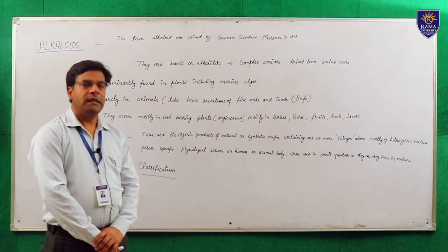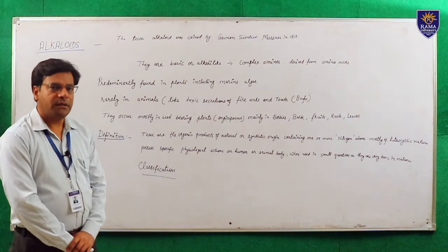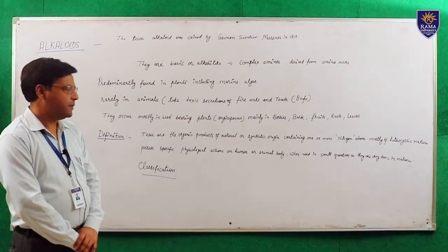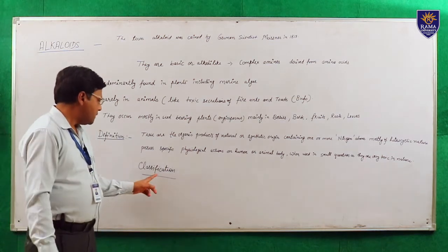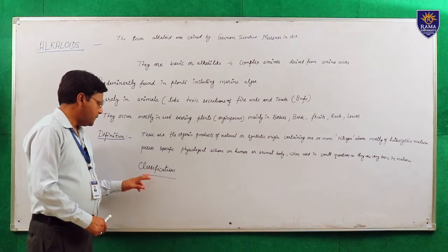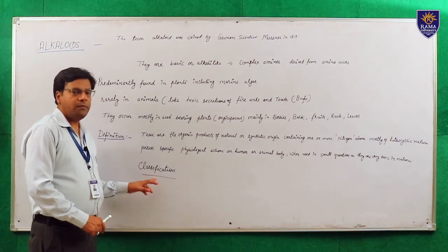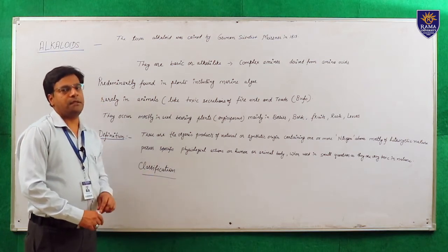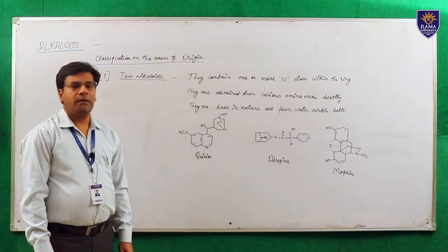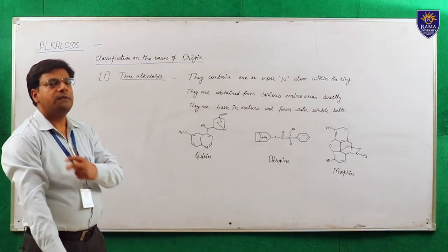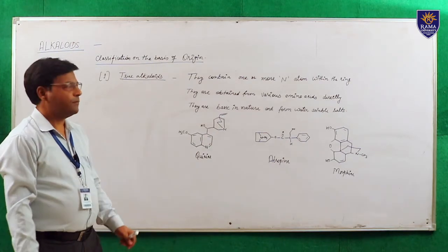Now we will see the classification of alkaloids on the basis of origin and on the basis of chemical nature. Alkaloids are classified on the basis of origin.